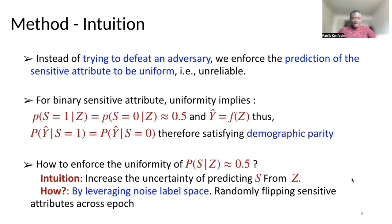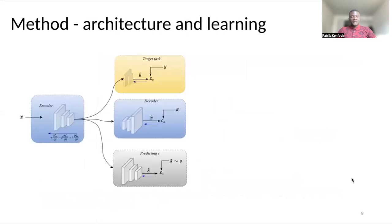How to enforce this uniformity? The intuition here is that we would like to increase the uncertainty of predicting S from Z. We know that noise is a good way to have uncertainty in predictions in neural networks. We leverage noisy label space by randomly flipping the sensitive attribute of people or individuals during the training.